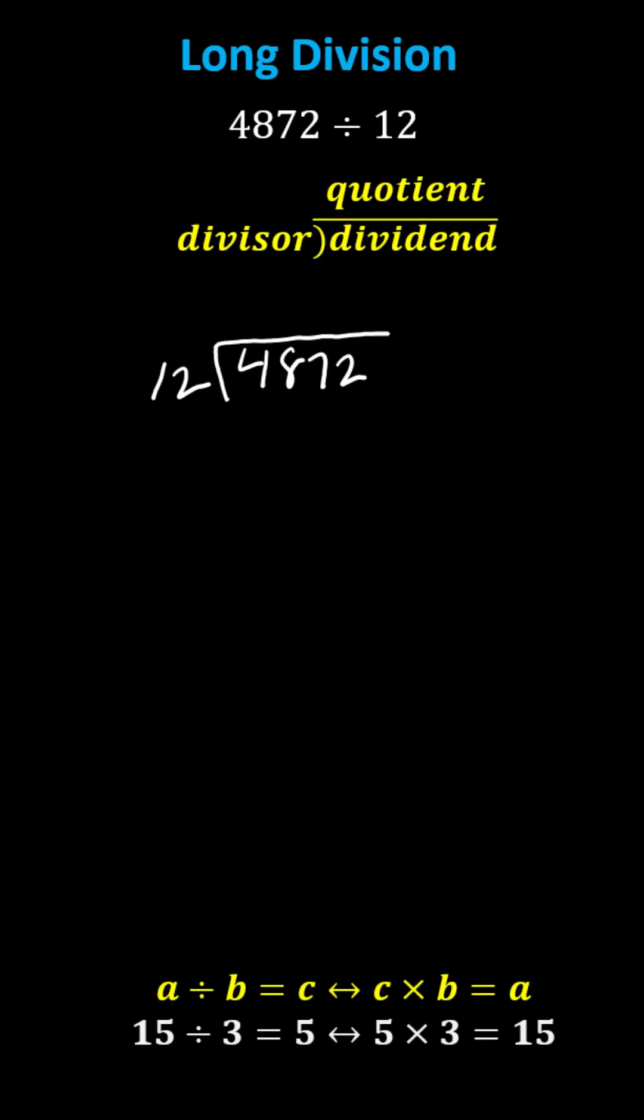And now to begin, because the divisor is a two-digit number, we focus only on the leftmost two digits of the dividend, which is 48. And now we determine how many 12s there are in 48. And because 12 times 4 is 48, there are exactly four 12s in 48. We record a 4 above the 8 in the dividend, which will be the leftmost digit of the quotient.